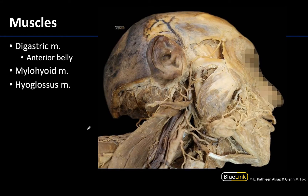Lastly, let's get a sneak peek at an extrinsic tongue muscle, which we will see in a bit more detail in the oral cavity session. This is going to be the hyoglossus muscle. You can see a little bit of it there. You can see the lingual artery right here diving deep to the muscle. The hyoglossus is going to extend from the greater horn and body of the hyoid bone to the side of the tongue, so it makes sense that we'll see it a little better in the oral cavity session.